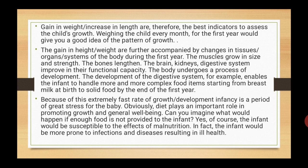Gain in weight and increase in length are the best indicators to assess the child's growth. Weighing the child every month for the first year would give a good idea of the pattern of growth. The gain in height and weight are accompanied by changes in tissues, organs, and skeletal systems of the body. During the first year, muscles grow in size and strength, bones lengthen, and the brain, kidneys, and digestive system improve their functional capacity. The development of the digestive system enables the infant to handle more complex food items, starting from breast milk at birth to solid food by the end of the first year.